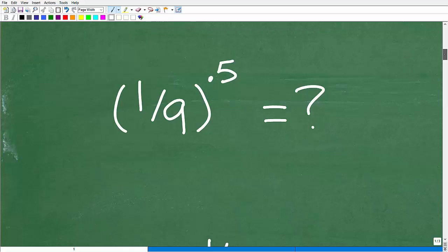Here is our problem. We have 1/9 to the 0.5 power. A lot of you are probably saying, what do I do with this 0.5? Maybe some of you said, instead of 0.5, let's write this as an equivalent fraction, because 0.5 is equal to 1/2.